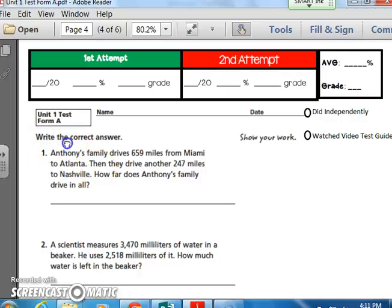It says write the correct answer. Number one. Anthony's family drive 659 miles from Miami to Atlanta. Then they drive another 247 miles to Nashville. How far does Anthony's family drive in all? I'm going to read it again. This time, if you need to make notes, please make some thinking notes. Anthony's family drive 659 miles from Miami to Atlanta. Then they drive another 247 miles to Nashville. How far does Anthony's family drive in all? Pause the recording and write your answer.